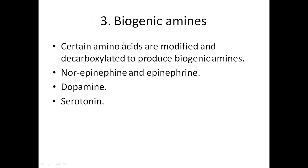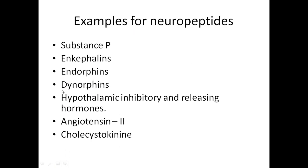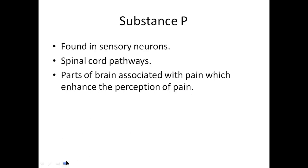The next type of neurotransmitters are the biogenic amines. These are certain amino acids that are modified — usually they are decarboxylated to produce what are known as the biogenic amines. Three types of biogenic amines function as neurotransmitters: number one, epinephrine and norepinephrine; dopamine; and serotonin. The examples for neuropeptides are substance P, enkephalins, endorphins, dynorphins, hypothalamic inhibitory and releasing hormones, angiotensin II, and cholecystokinin. These are the examples for the neuropeptides.